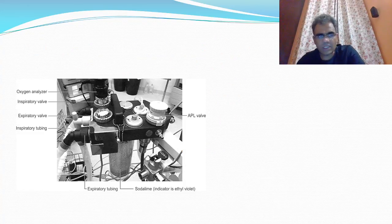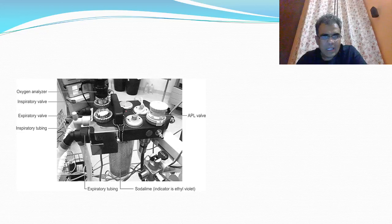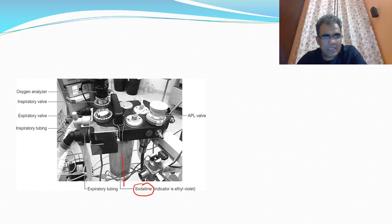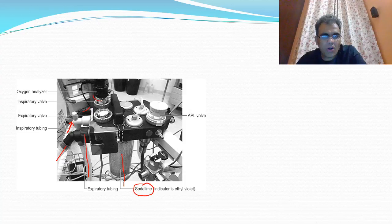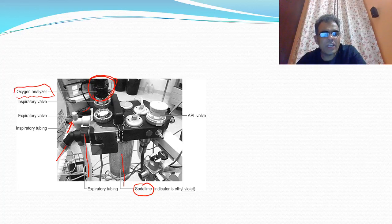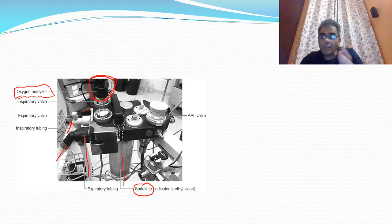This is actually a closed circuit. You can see this is the soda lime canister, this is the expiratory limb and obviously this will be the inspiratory limb. We identify the inspiratory limb because of this oxygen analyzer, which is a very important mandated device that tells you the final delivered concentration of oxygen to the patient. So obviously that will be placed in the inspiratory limb.